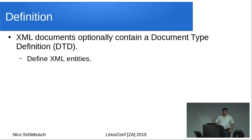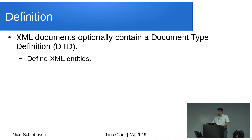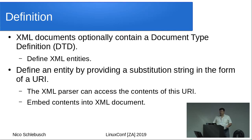A definition for external entities — I need to clarify a few things up front. An XML document allows you to define what they call a DTD, a Document Type Definition, which lets you specify the structure of your XML file. It's not widely used anymore since the XSD — the XML Schema Definition — was invented. You can do so much more with XSD than with a DTD. But the DTD allows you to define XML entities, where you provide a substitution string in the form of a URI. The XML parser can access that URI's content, whether it's a literal string, a remote server, or a local file system.